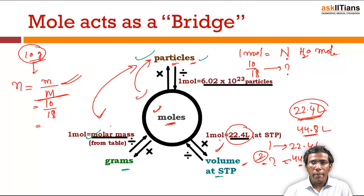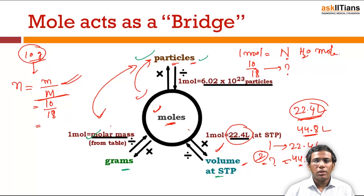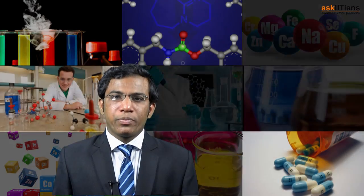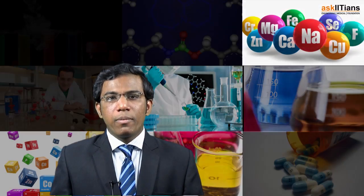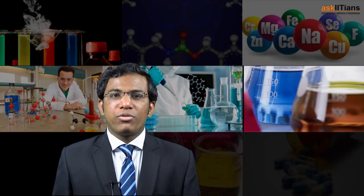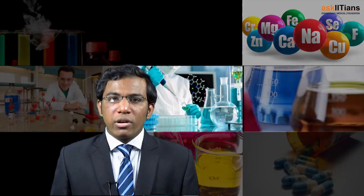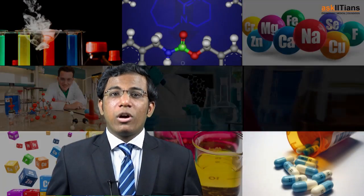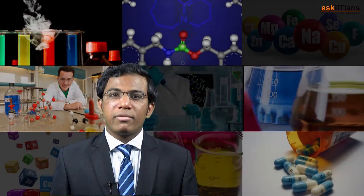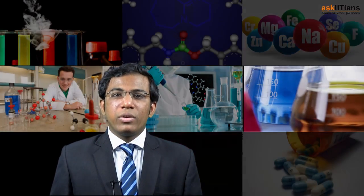This is about the mole concept — the definition of a mole and how it acts as a bridge between mass, particles, and volume occupied by gas. In this part we discussed what a mole is, how many atoms, molecules, or formula units are present in one mole of a solid, liquid, or gas, and how the mole is used to convert mass into number of particles and vice versa. In our next part we will discuss about empirical and molecular formulas, so stay tuned.